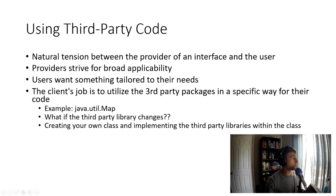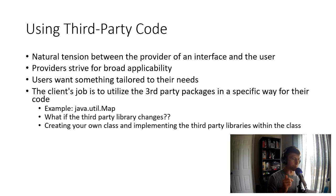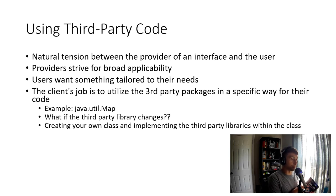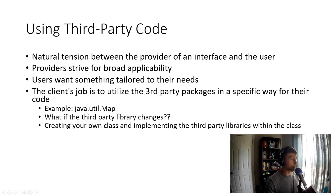The client's job is to utilize the third-party package in a specific way for their code. In this example we're talking about maps — hash maps, tree maps. What if a third-party library changes? That's where the tension begins. You can use the third-party library freely, but if it changes — because other people are maintaining and developing it — a major change could mean your whole entire codebase now has to change. So Uncle Bob advocates for creating your own class and implementing the third-party library within that class in your own customized fashion.